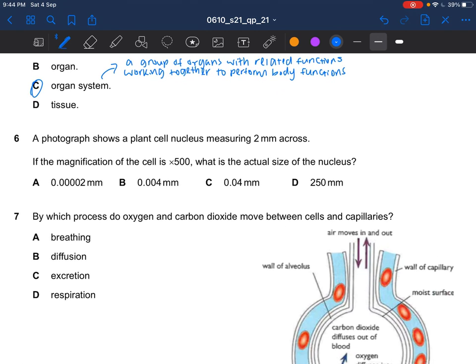Next question. A photograph shows a plant cell nucleus measuring 2mm across. If the magnification of the cell is 500, what is the actual size of the nucleus? Magnification equals image size over actual size. Magnification is 500, image size is 2mm. So the actual size would be 0.004mm, which is B.